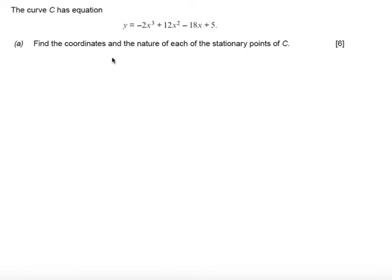In this question we're told that the curve C has equation y equals minus 2x cubed plus 12x squared minus 18x plus 5. Part A asks us to find the coordinates and nature of each of the stationary points of C.